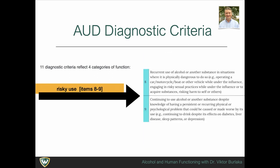The third function deals with risky use of substances and includes two criteria. Criterion 8: repeated substance use in physically dangerous situations, including drunk driving and engaging in risky sexual practices. Criterion 9: repeated use despite persistent physical and psychological problems, such as liver problems, sleep issues, or depression. Note that Criterion 6 also addresses recurrent use despite problems, but those problems relate to relationships—for example, with a spouse or child.